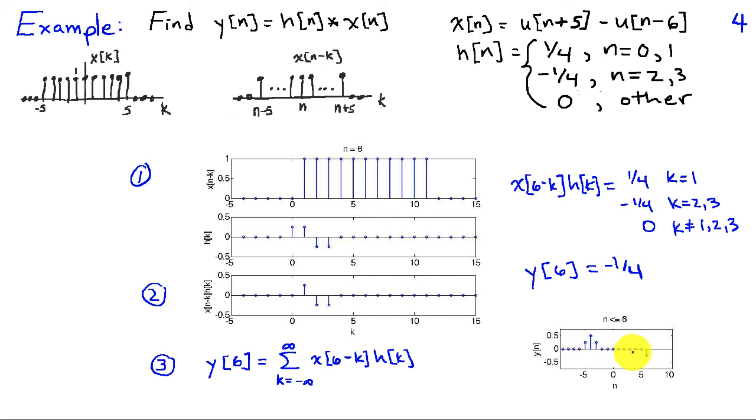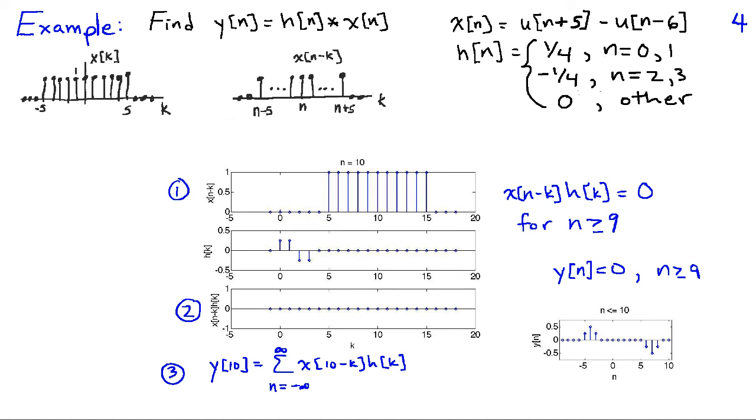So I've graphed those extra zero values that we didn't look at, and now here the value for n equal to 6. And you can continue to go through this process. And one thing that you note is that once n gets greater than or equal to 9, then this trailing edge no longer overlaps with h of k, the non-zero portion, and the product goes back to 0 again.